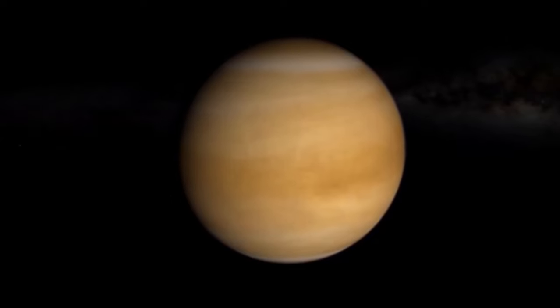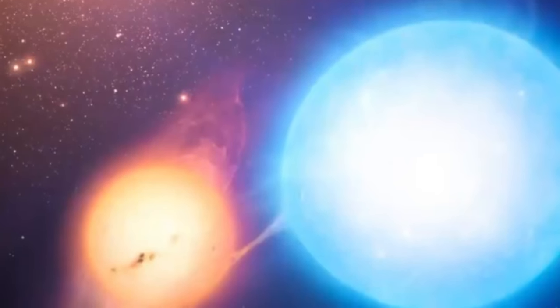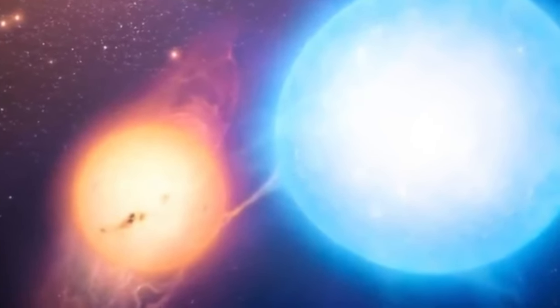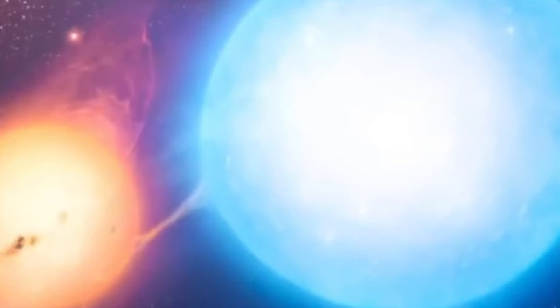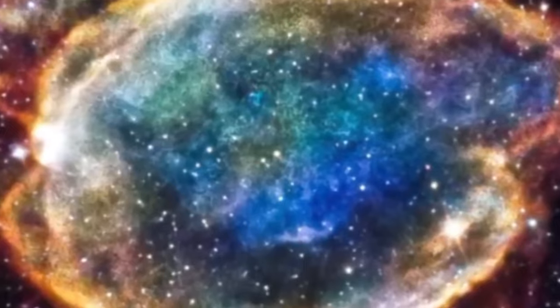For those who may not be familiar with Uranus, this ice giant resides a staggering 2.9 billion kilometers from the Sun and has a unique feature. It rotates on its side at a 90-degree angle from the plane of its orbit.